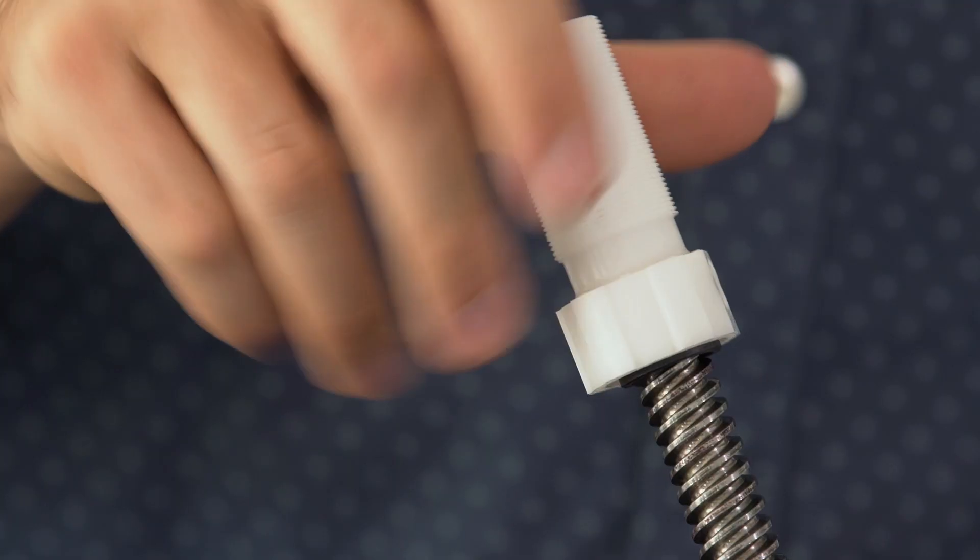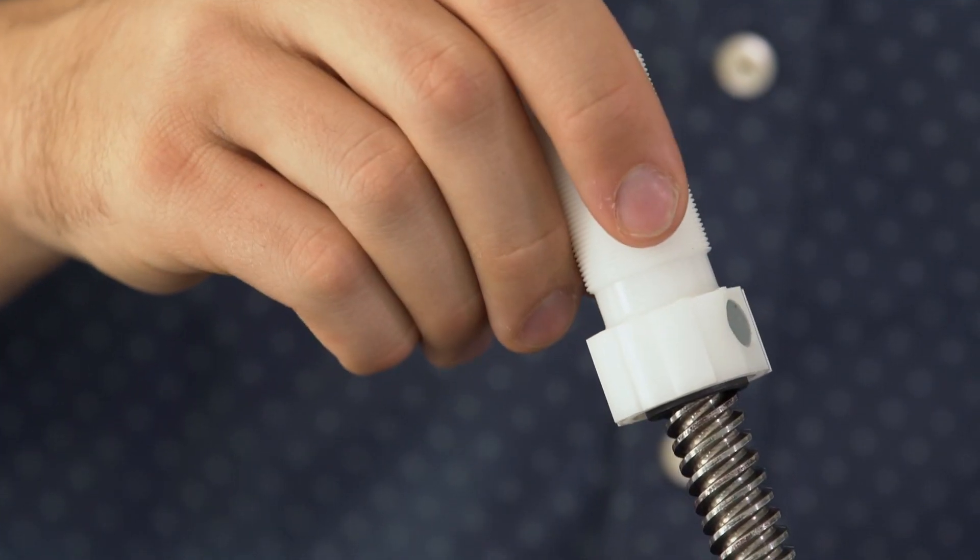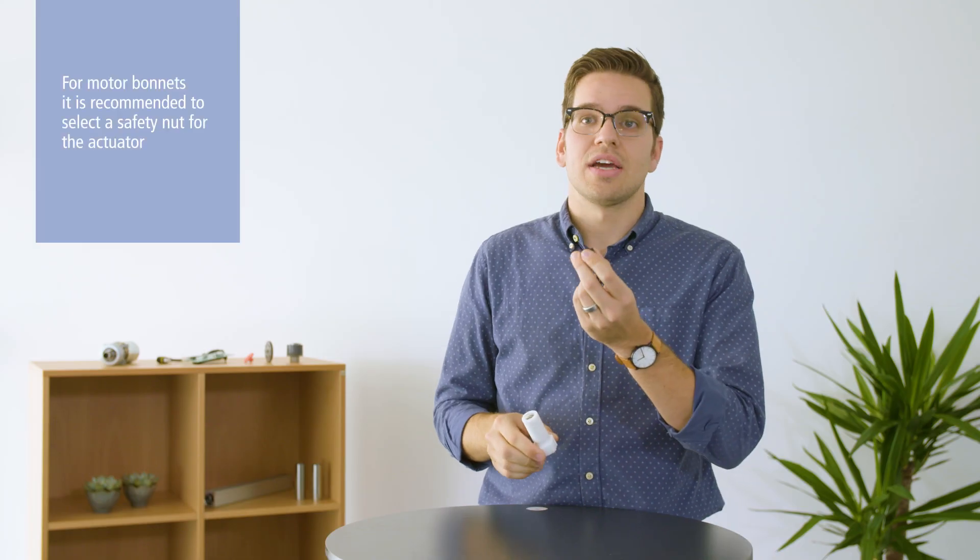For applications where safety is a high priority, a safety nut can be added behind the spindle nut to catch the actuator. If the spindle nut were to wear down and break, the safety nut catches the actuator and allows it to only retract while still holding the load. This is a good indication that it's time to replace the actuator.